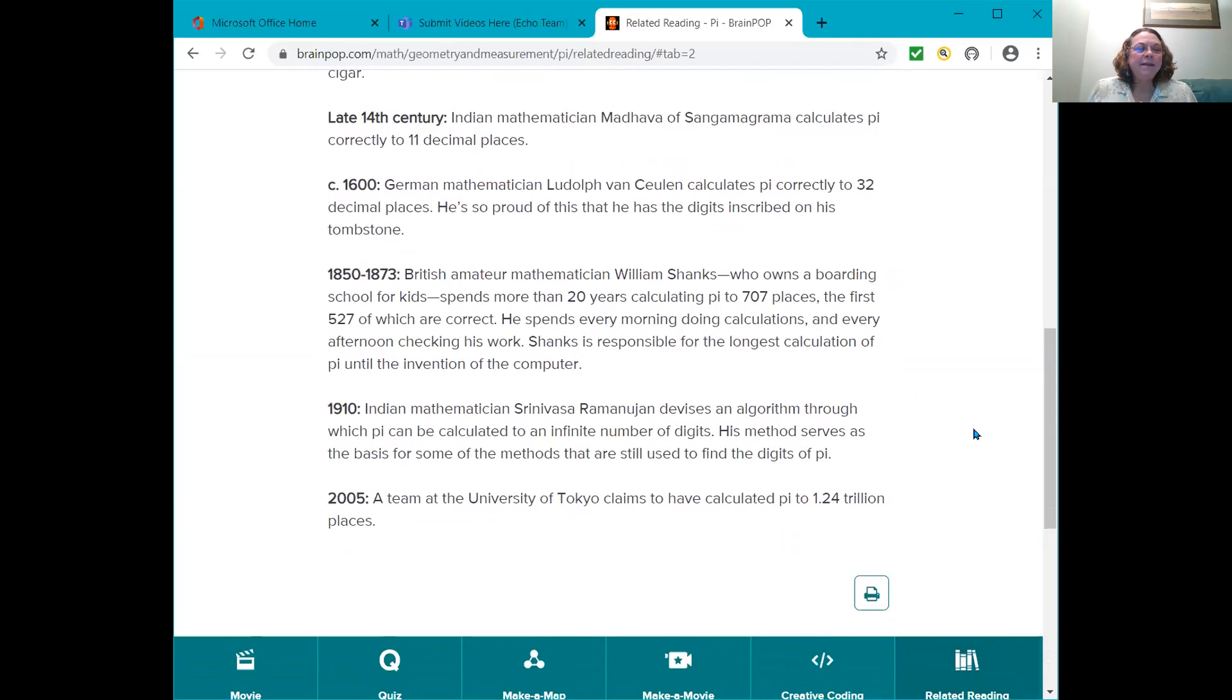In 1850 through 1873, British amateur mathematician William Shanks, who owns a boarding school for kids, spends more than 20 years calculating Pi to 707 places. The first 527 of which are correct. He spends every morning doing calculations and every afternoon checking his work. Shanks is responsible for the longest calculation of Pi until the invention of the computer. In 1910, Indian mathematician Srinivasa Ramanujan devises an algorithm through which Pi can be calculated to an infinite number of digits. That was in 1910. Pretty impressive. His method serves as the basis for some of the methods that are still used to find the digits of Pi.